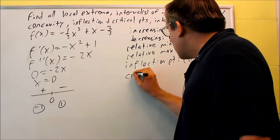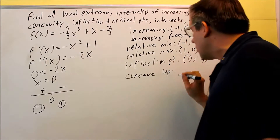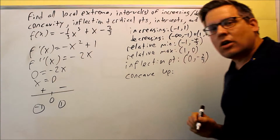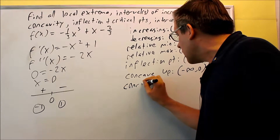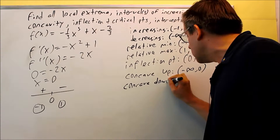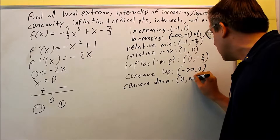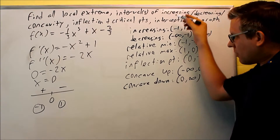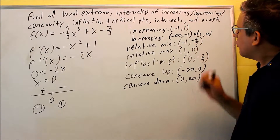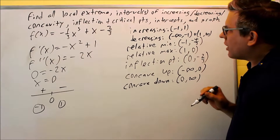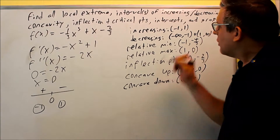Next let's talk about concavity. Concave up occurs where the second derivative is positive, which is from negative infinity to zero. Concave down occurs where it's negative, which is from zero to infinity. We've now found the intervals of increase and decrease, concavity, inflection point, and critical numbers.